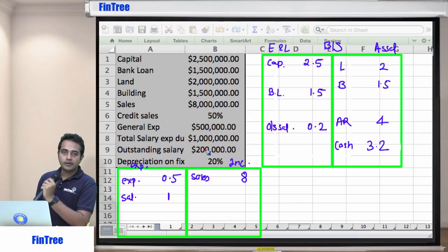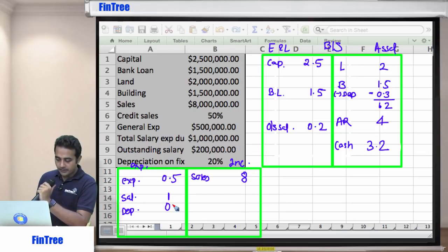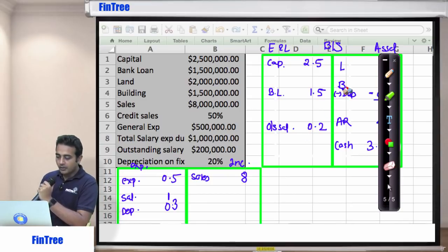Depreciation on fixed assets 20%. So we should charge depreciation on land and building both. Depreciation only on building. On land, there is no depreciation. So then we will say minus depreciation and 1.5 minus 0.3. So now this becomes 1.2. What should be second entry for depreciation? Expense. So we will have a depreciation expense which would be 0.3. Now just a minute.